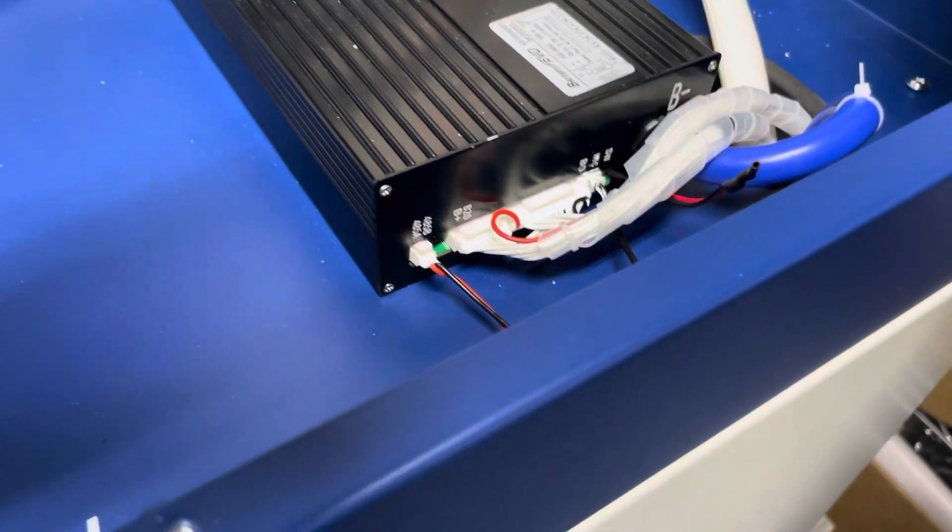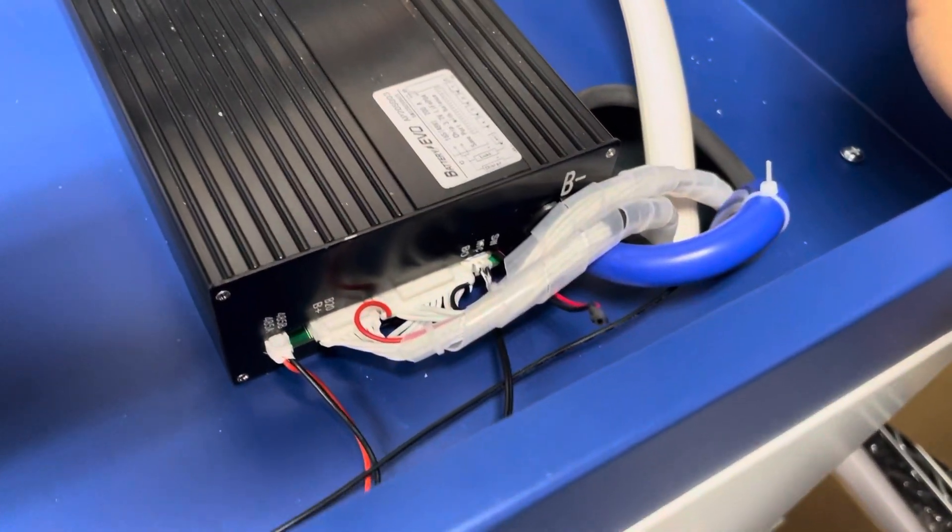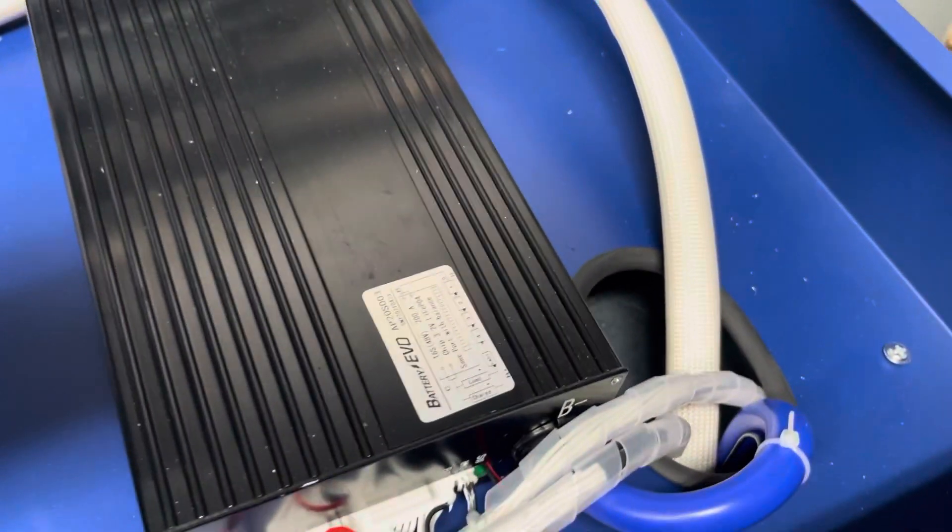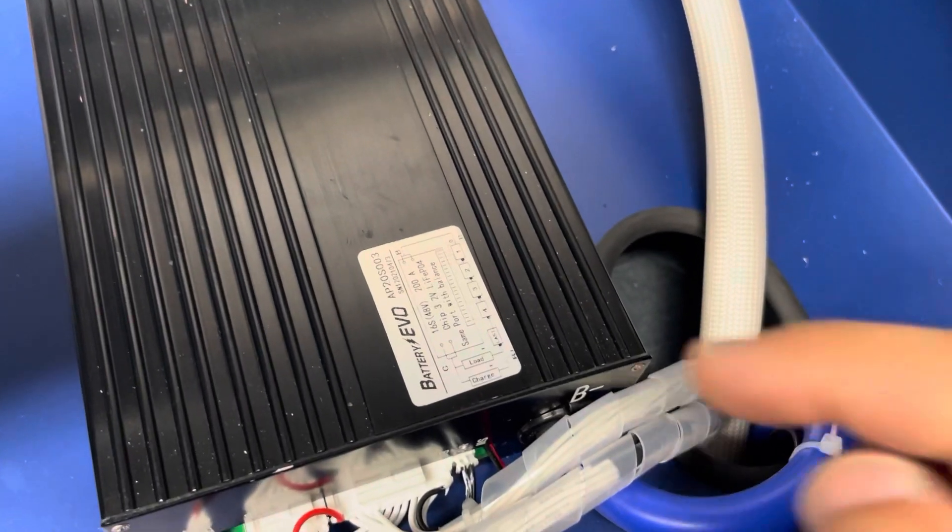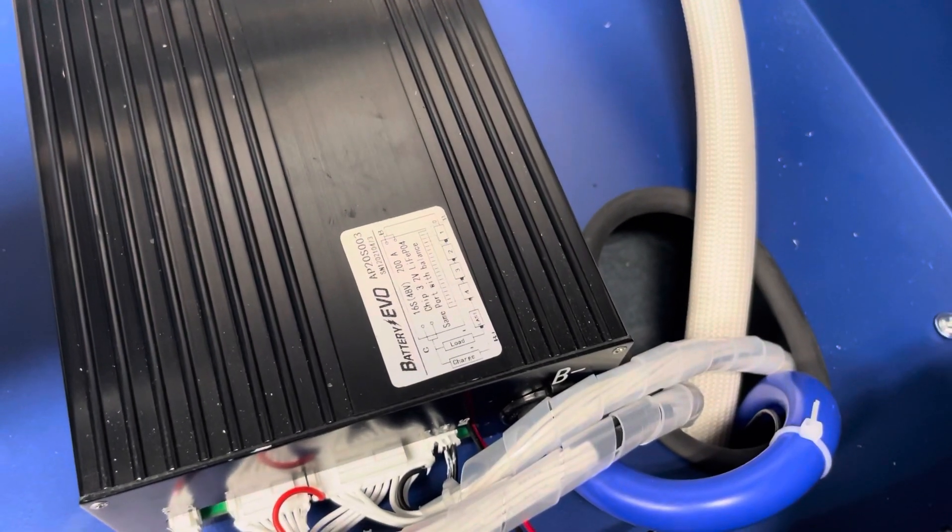This is the BMS that's used here. This is Battery Evo. Gives the part number: 16s, 200 amp.